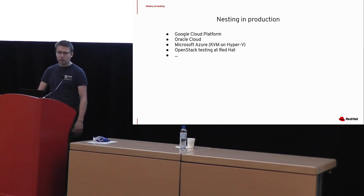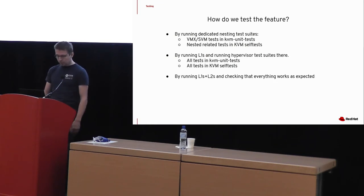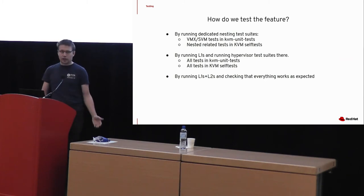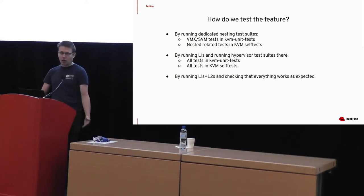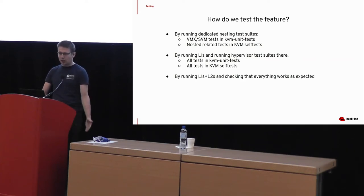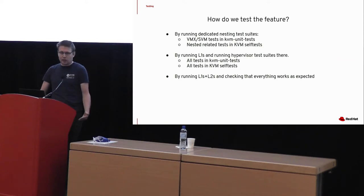I decided to take a look at how we actually test nesting and why regressions happen. We have some test suites for KVM. First, we can write tests to actually test nested features — we do this, we have VMX and SVM tests in KVM unit tests. Second, we can launch a VM as L1 and run all our test suites there to make sure it behaves basically the same as on normal hardware. And of course we can test nesting by using nested — launch L2 VMs and check that it doesn't misbehave.